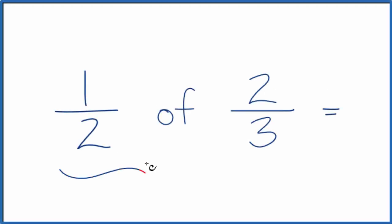So here's how you find 1 half of 2 thirds. The trick to do this is to think of this of here as a multiplication symbol. So really we're taking 1 half times 2 thirds to get 1 half of 2 thirds.